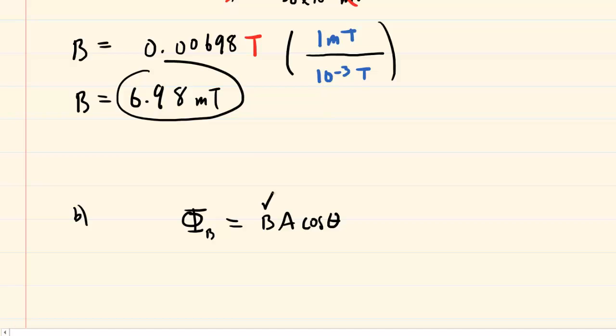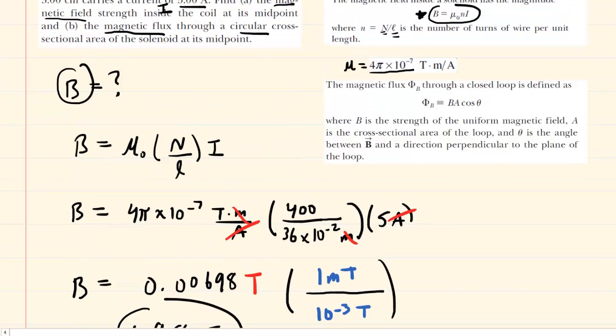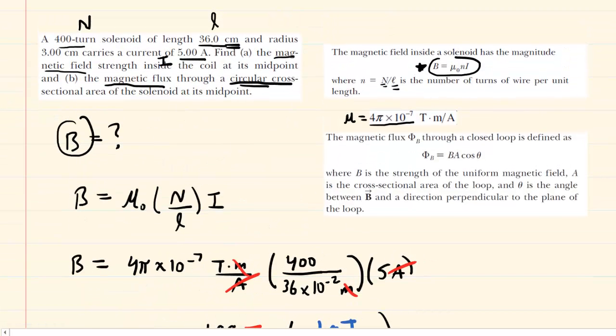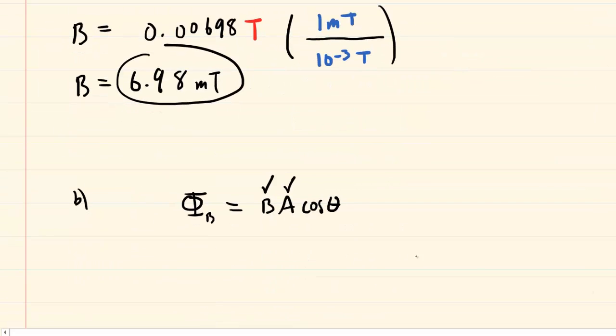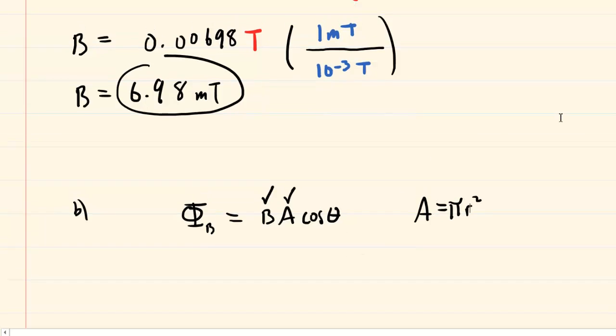The magnetic flux is equal to the magnetic field times the area times the cosine of an angle. We already have the magnetic field from part A. The area is going to be quite easy, because the question noted this is a circular cross-section. So for area, we would use the area of a circle, and the area of a circle is pi times radius squared. Perhaps the most challenging thing here in part B is the angle.